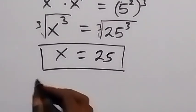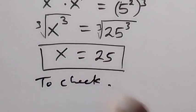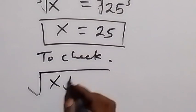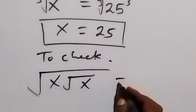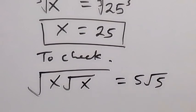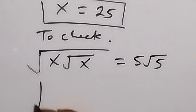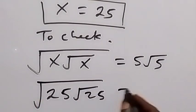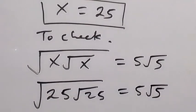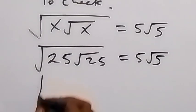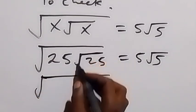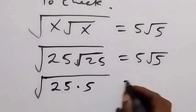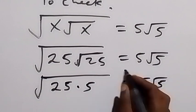Now we can check from what we were given. We are given square root of x root x equals to 5 root 5, and we got x to be 25. So we substitute: square root of 25 root 25 equals to 5 root 5. From here, square root of 25 is 5, so that's 5 times 5 — giving us 5 root 5.